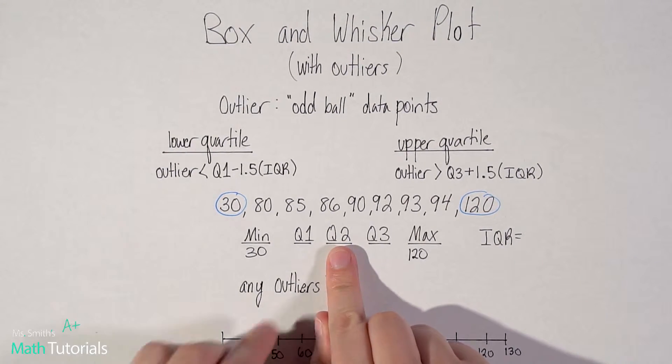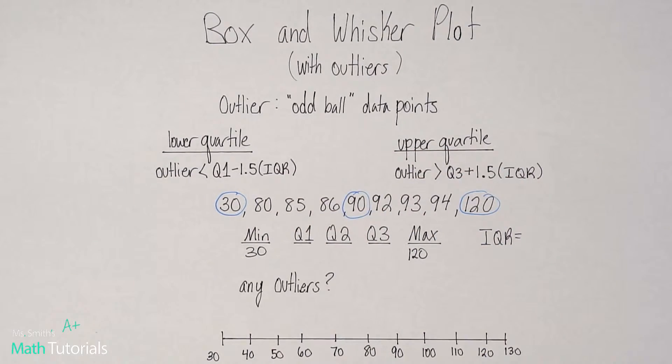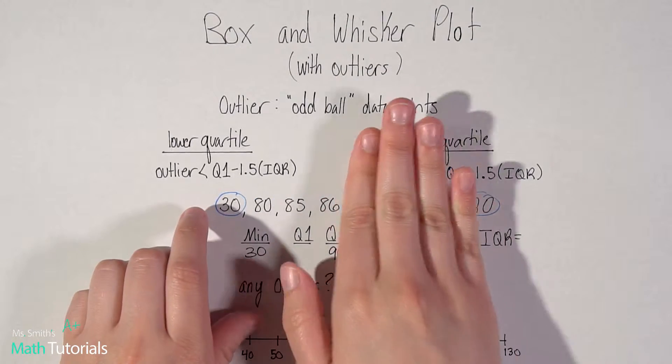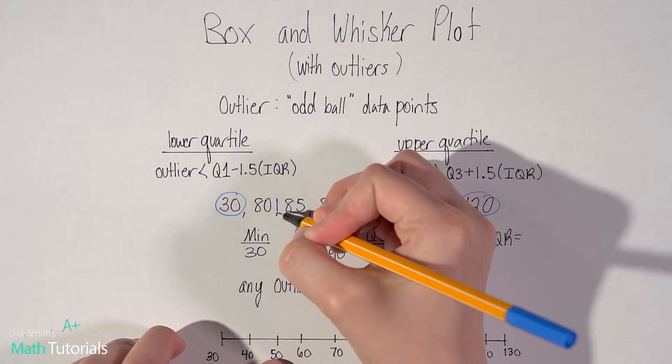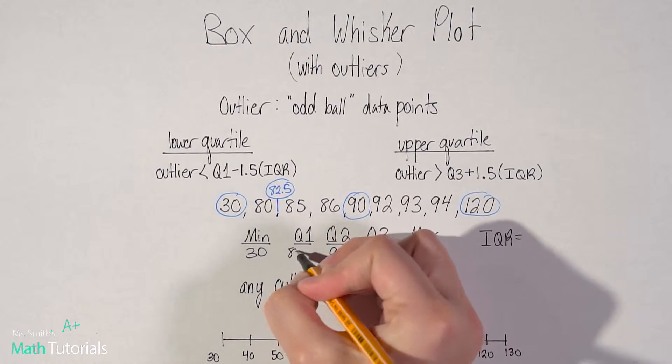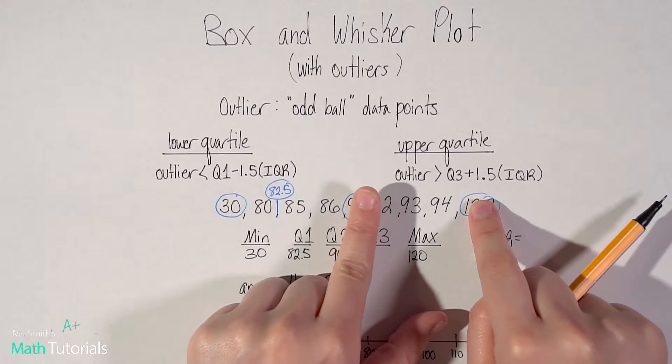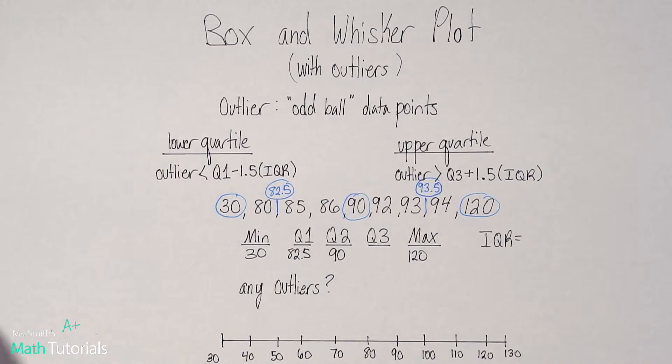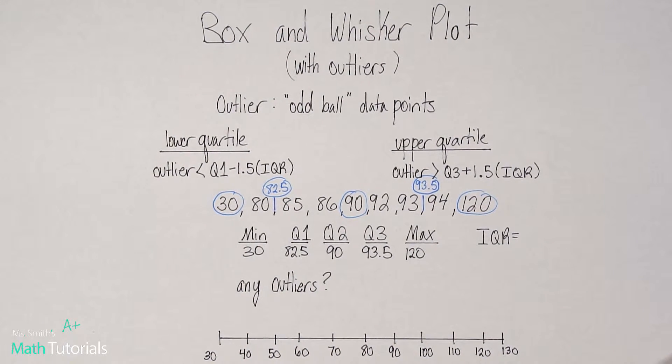I need to know the Q2, which would be the median of all the data. So I'm going to move in. I see it's right at 90. I need to know my Q1. My 90 has been used, so that's done. I need to just find the center here. I've got two in the center, so I'll need to find the average. The average of 80 and 85 is going to be 82.5. And for my Q3, cover up the 90. This is my upper quartile. So it would be between 93 and 94, which would end up being 93.5. I know I'm flying through this. I have my five number summary now.